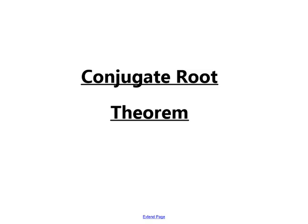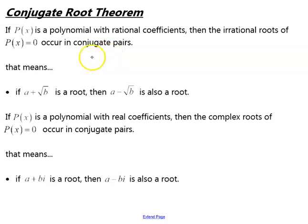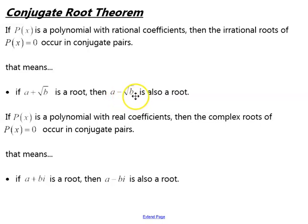Conjugate Root Theorem. The conjugate root theorem states that if p of x is a polynomial with rational coefficients, then the irrational roots of p of x equals 0 occur in conjugate pairs. That means that if we have a root a plus square root of b, then a minus square root of b is also a root.